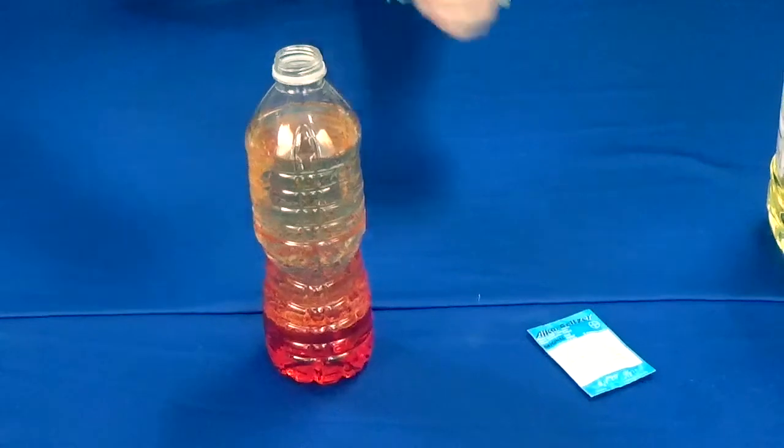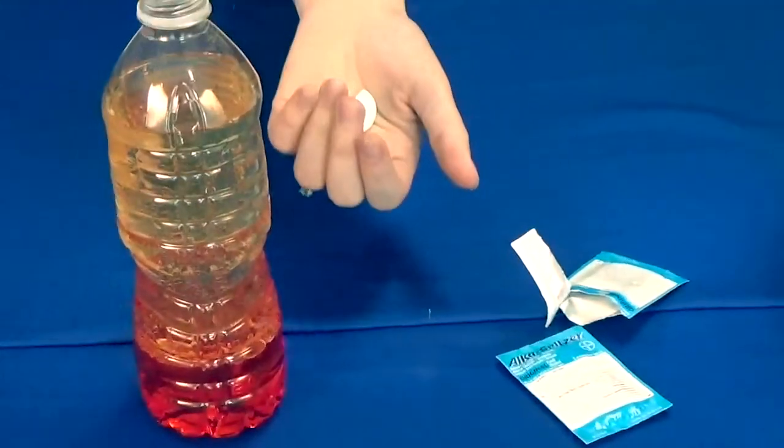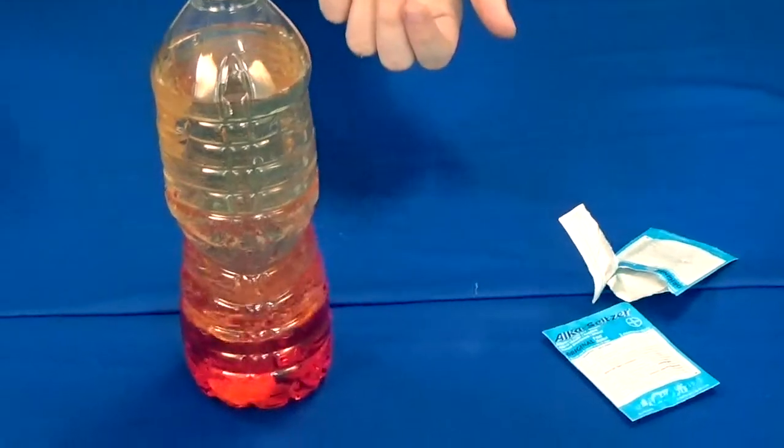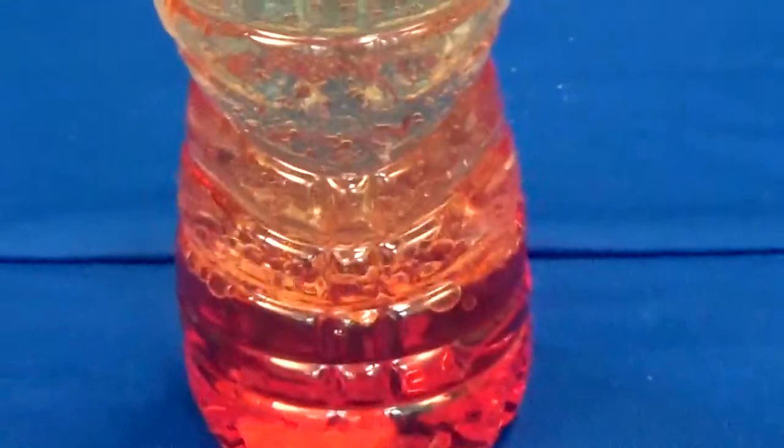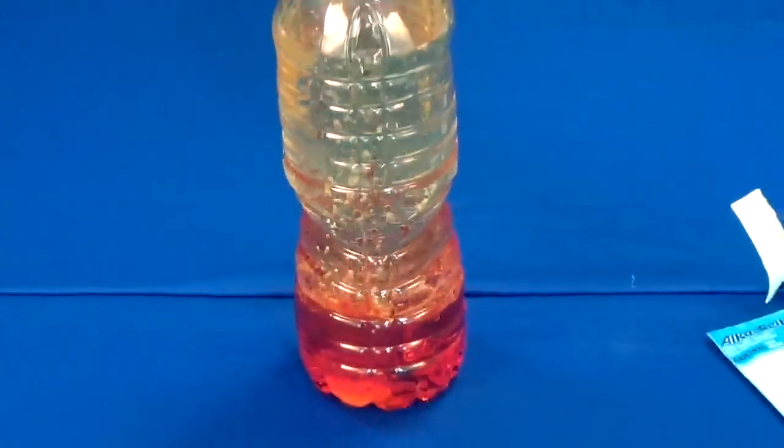Then break a single Alka-Seltzer tablet into pieces and add them one at a time to your bottle, allowing a couple of seconds between each piece. The Alka-Seltzer and water react to create bubbles of carbon dioxide gas, which is less dense than the water and will move upward.